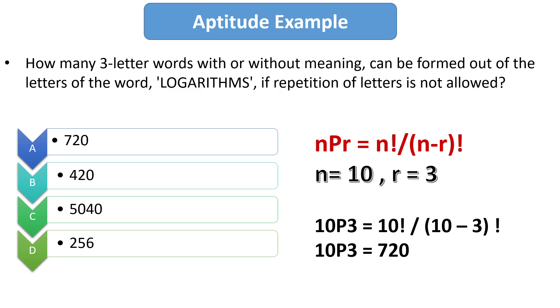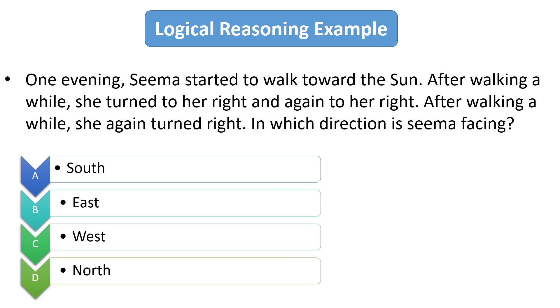So our first question from logical reasoning is one evening Seema started to walk towards the sun. After walking a while she turned to her right and again to her right. After walking a while she again turned right. So in which direction is Seema facing?